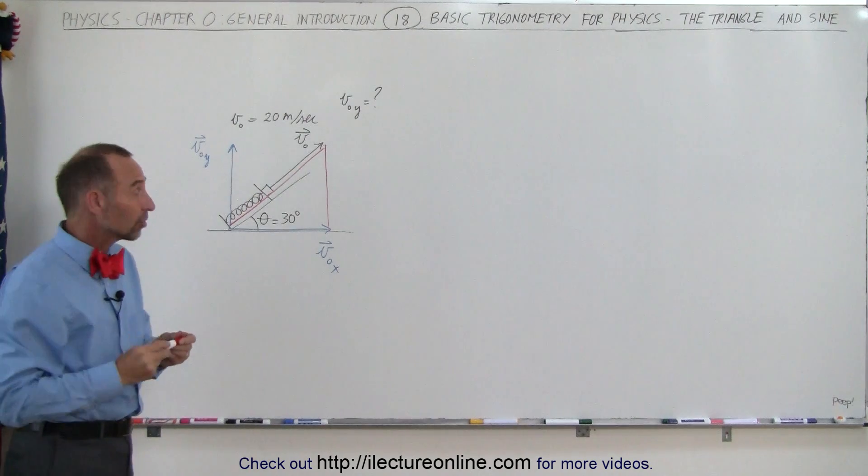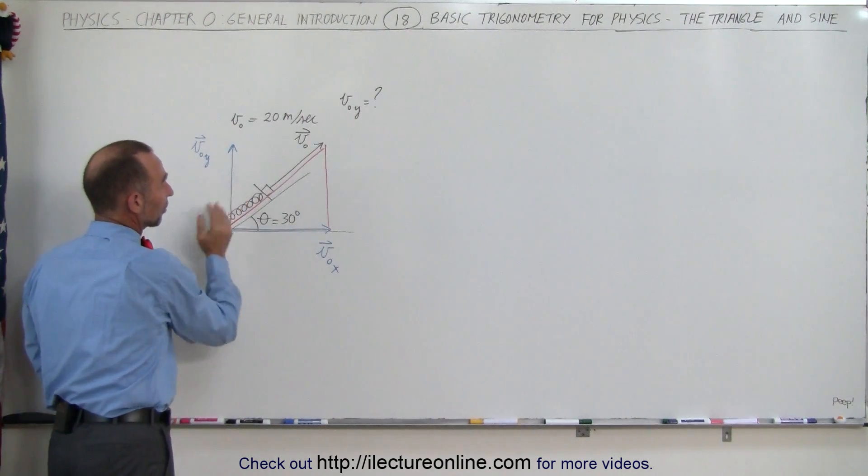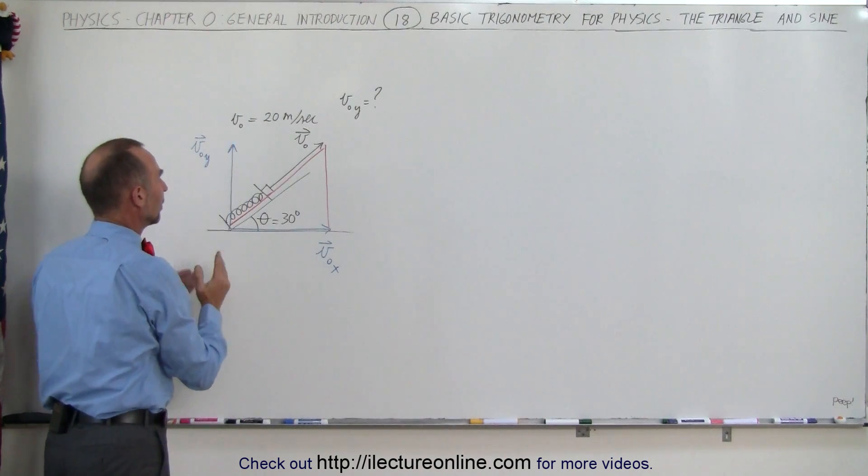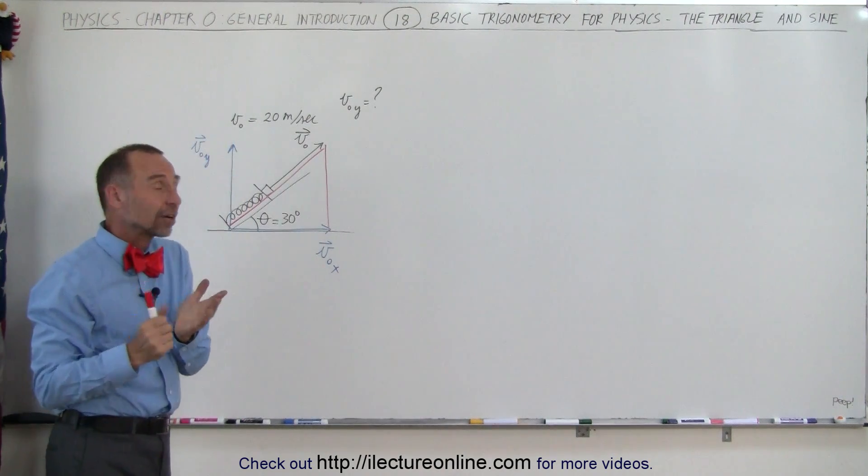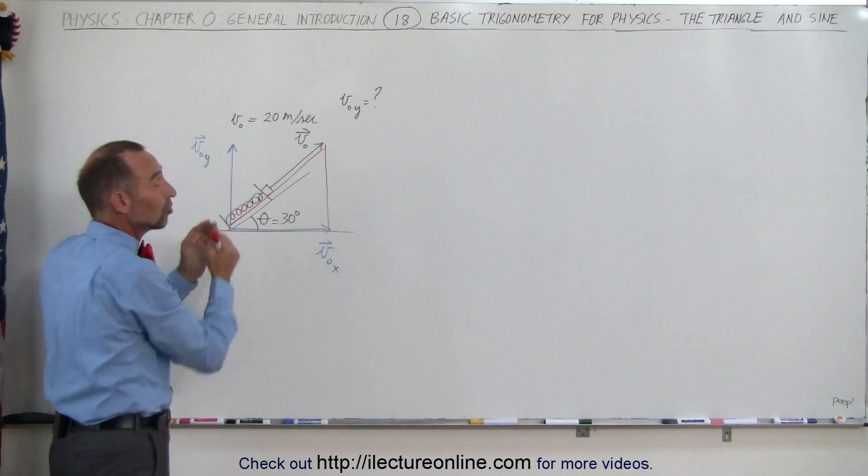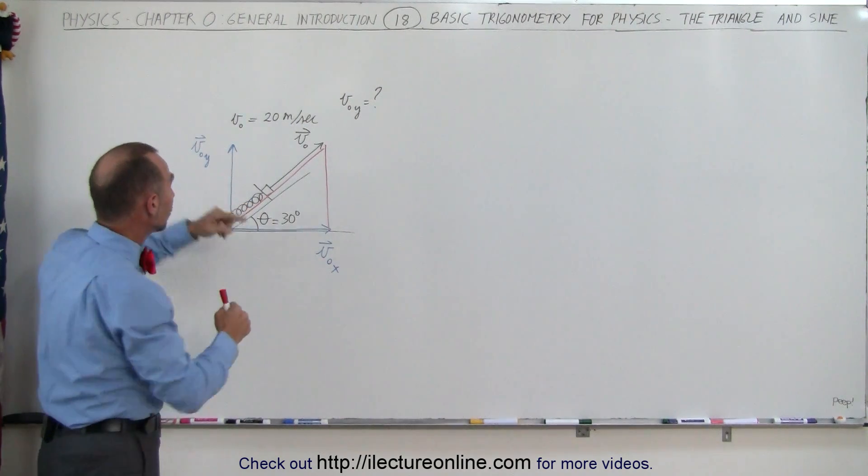And then since these are vectors, the v sub n is a vector, the v sub n in the x direction is a vector, the v sub n in the y direction is a vector. Vectors can be moved in any direction as long as the direction doesn't change and the amplitude, the magnitude doesn't change.